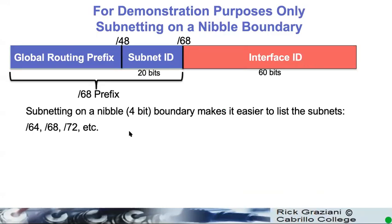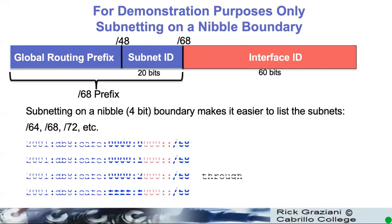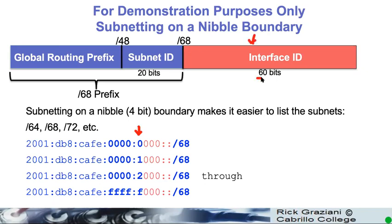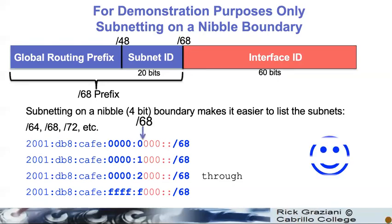So, what we've been doing is subnetting on a nibble boundary — make it easy. So, slash 64 to a slash 68. In this case, we've actually subnetted over one more hex digit into this interface ID. So, it used to be 64 bits, now it's a 60-bit interface ID — slash 68. This digit here used to be part of the interface ID; it's now part of the subnet. All we do is take these five hexadecimal digits and increment them by one in hex. Anytime we subnet on a nibble boundary, it makes our life easy.